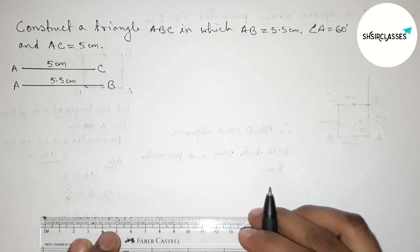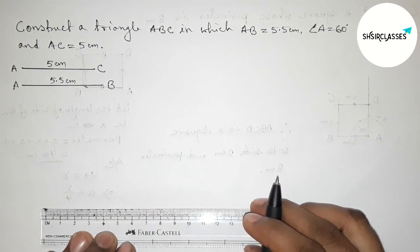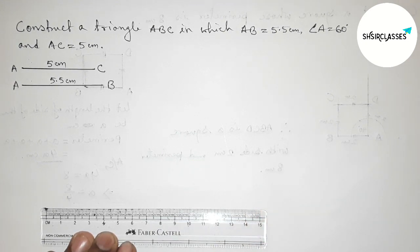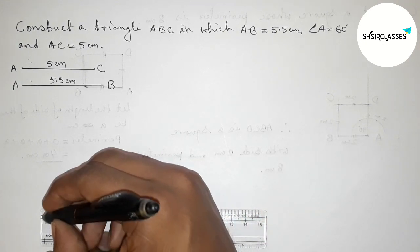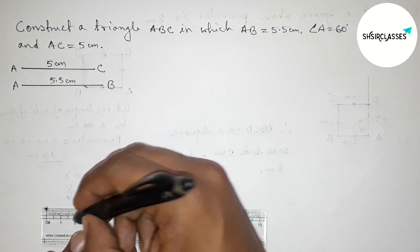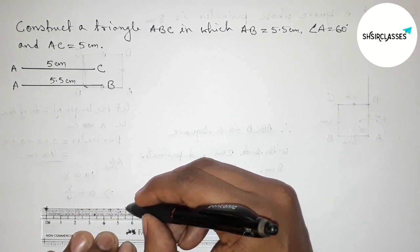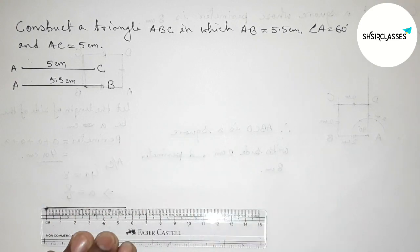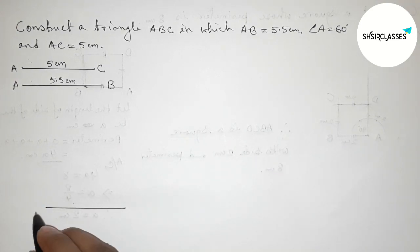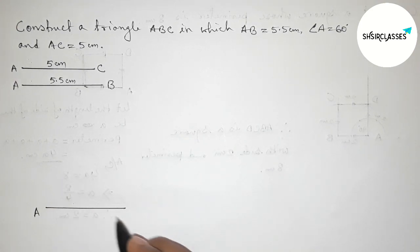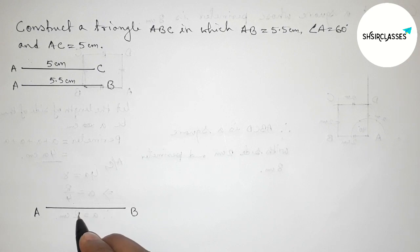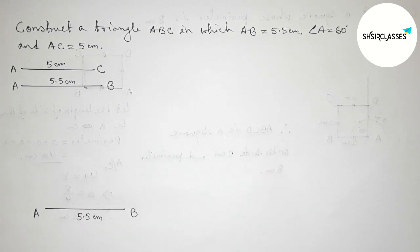Now we have to draw the side AB equals 5.5 centimeter. Starting from zero to 5.5 centimeter, marking point A at the start and point B at the end. So AB equals 5.5 centimeter.